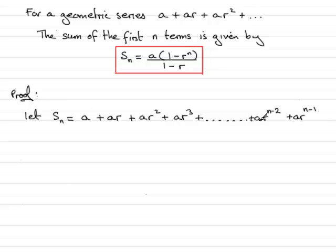Okay, let's call this equation number 1. Now what I'm going to do with equation number 1 is to multiply throughout by r, so therefore we're going to get r times Sn is going to equal, well multiply the first term by r and you get ar, second term by r and you get ar squared, and so on.